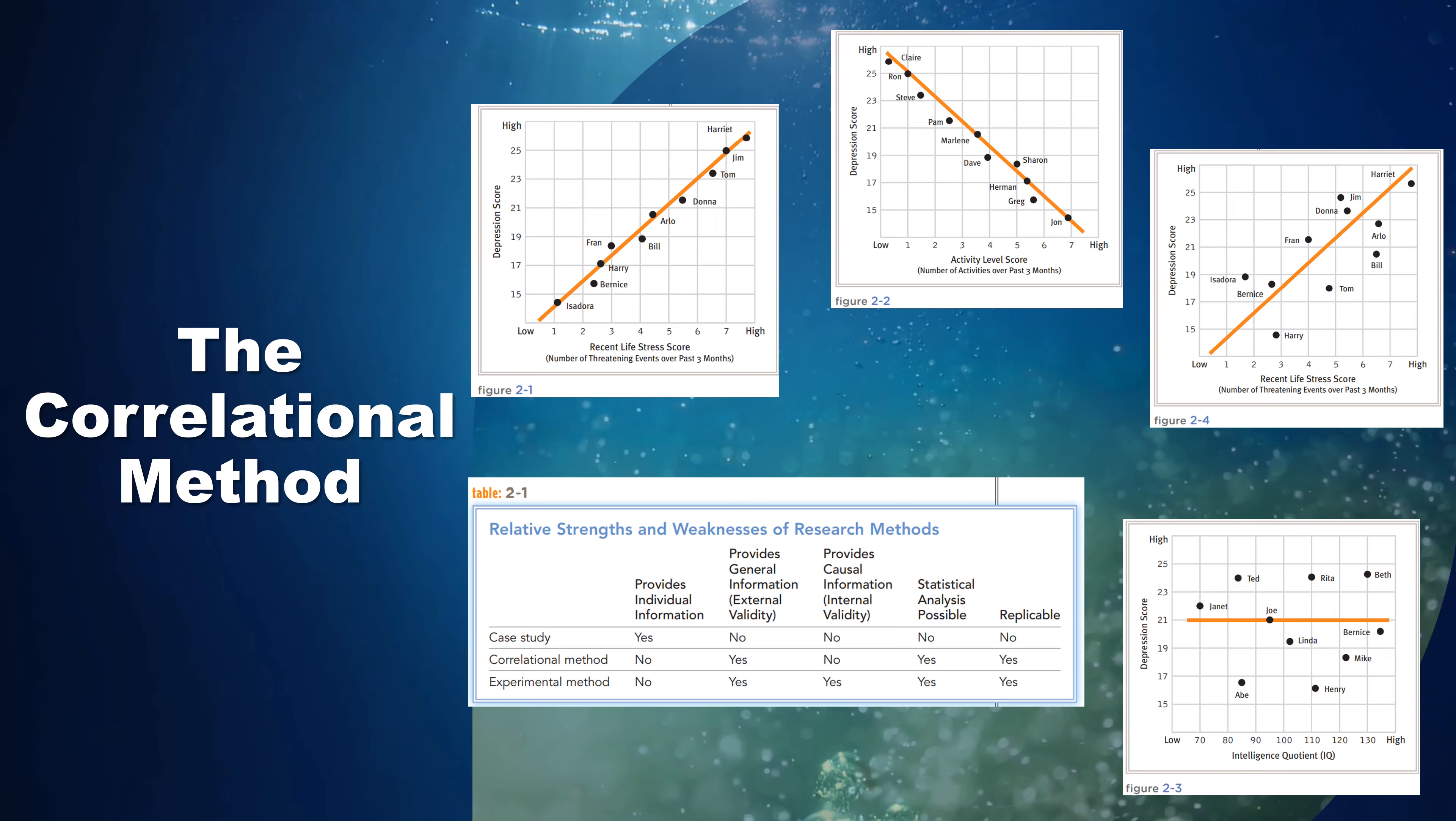Studies have found that depression and intelligence are unrelated, for example. In addition to knowing the direction of a correlation, researchers need to know its magnitude, or strength. That is, how closely do the two variables correspond. Does one always vary along with the other, or is their relationship less exact?